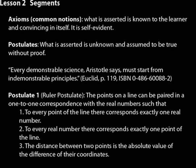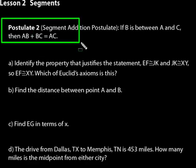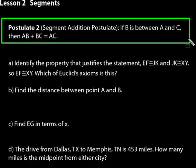Let's go into postulate 2 — the segment addition postulate. It says: if B is between A and C, then AB plus BC equals AC. We're not putting segment bars above AB and BC here because we're talking about distance — the distance AB plus the distance BC equals AC.